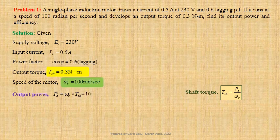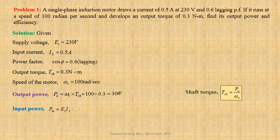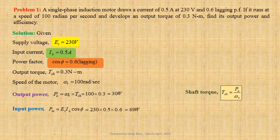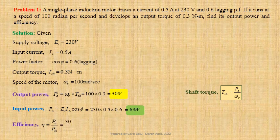Using values we get 100 into 0.3 equals to 30 watts. For single phase induction motor, input power Pin equals to Et into Il cos of phi. Using values we get 230 into 0.5 into 0.6 equals to 69 watts. Efficiency of the motor eta equals to Po divided by Pin. Using values we get 30 divided by 69 equals to 0.4348 per unit or 43.48 per cent.